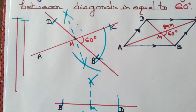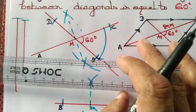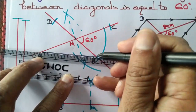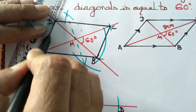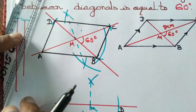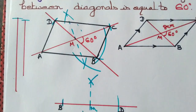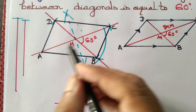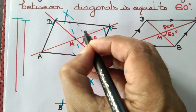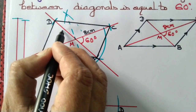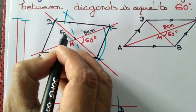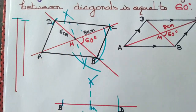We join A, B, C, and D to get the parallelogram — joining AB, BC, CD, and DA. Well done! We have obtained parallelogram ABCD with diagonal AC measuring 8 centimeters, diagonal BD measuring 6 centimeters, and the angle between those two diagonals equal to 60 degrees.